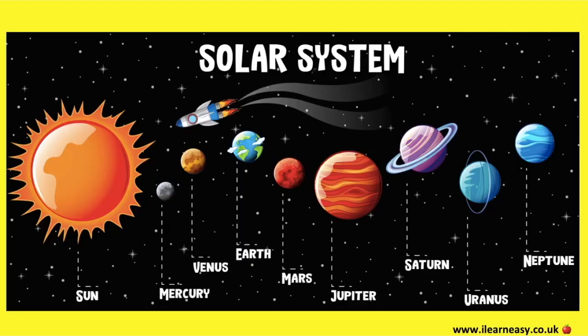There are eight planets in the solar system. The sun is a star, not a planet. It's at the center of the solar system. The sun gives heat and light to all the planets. The planets are always in the same order from the sun.